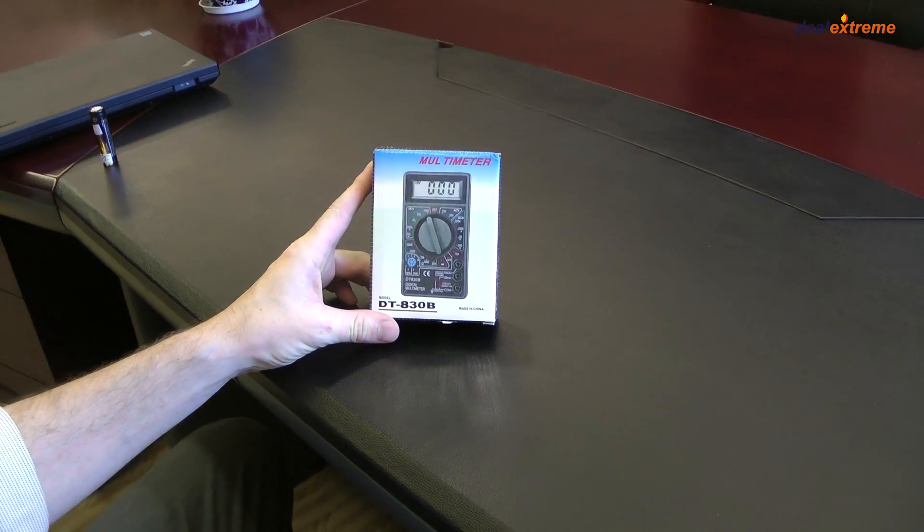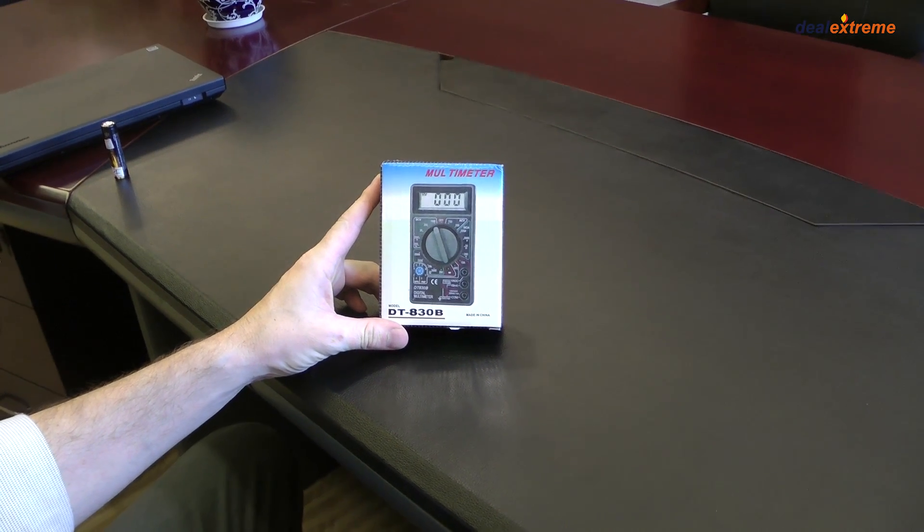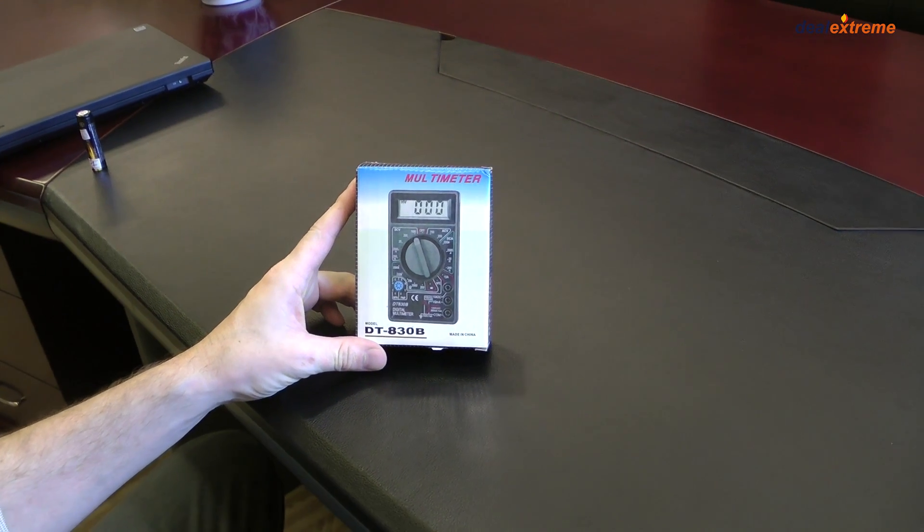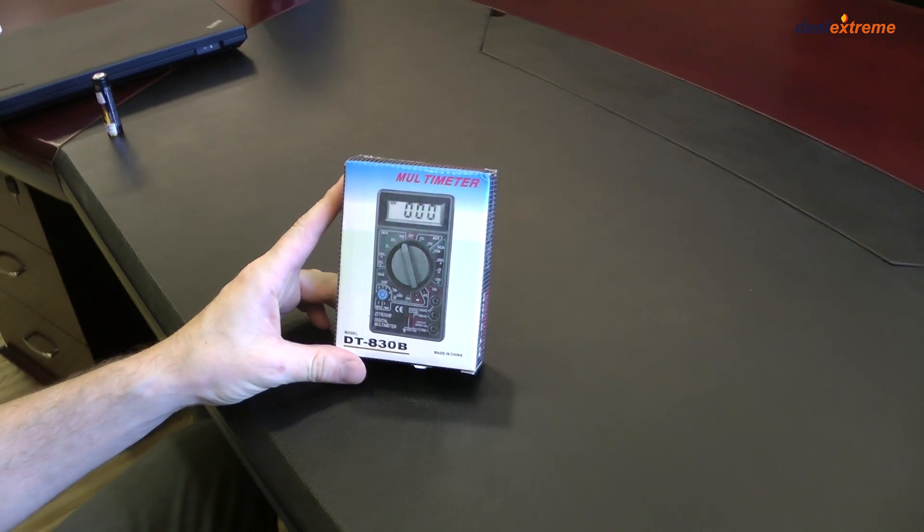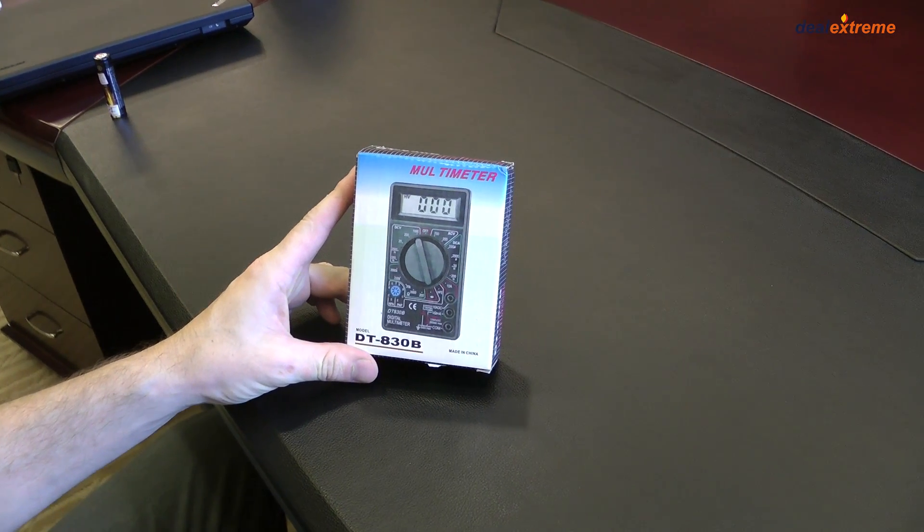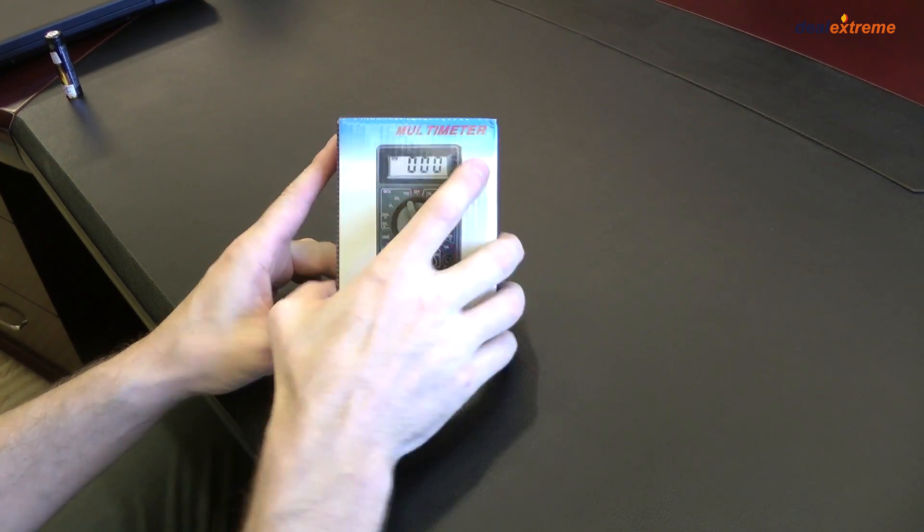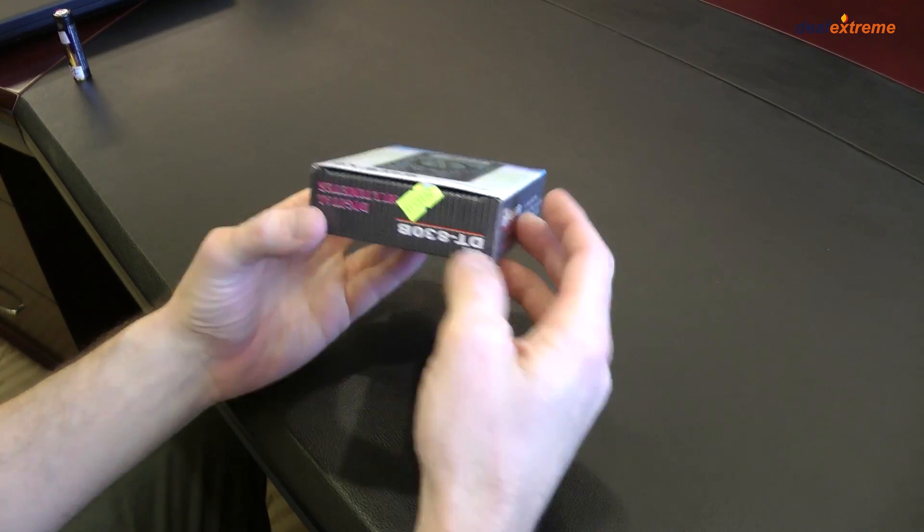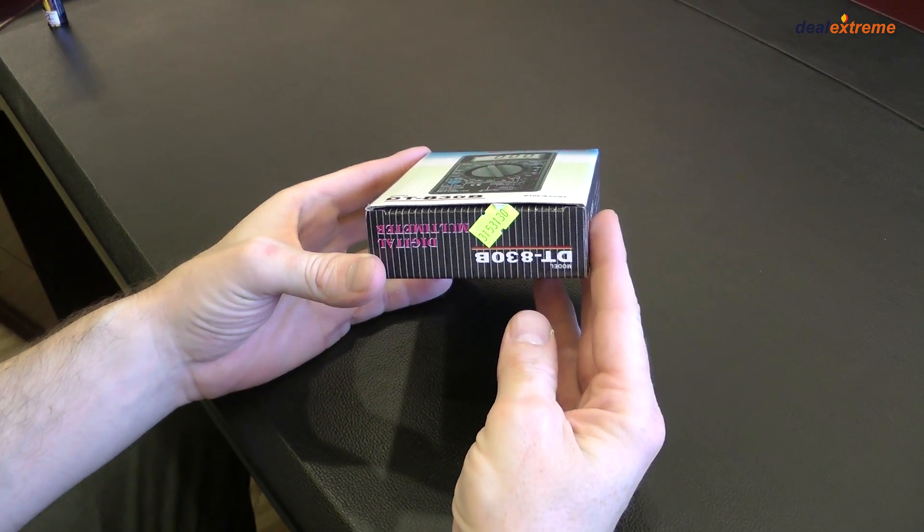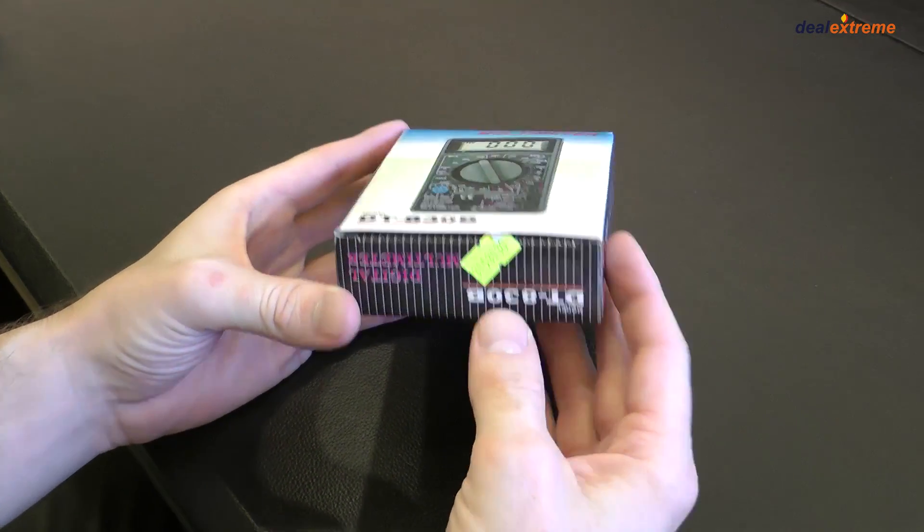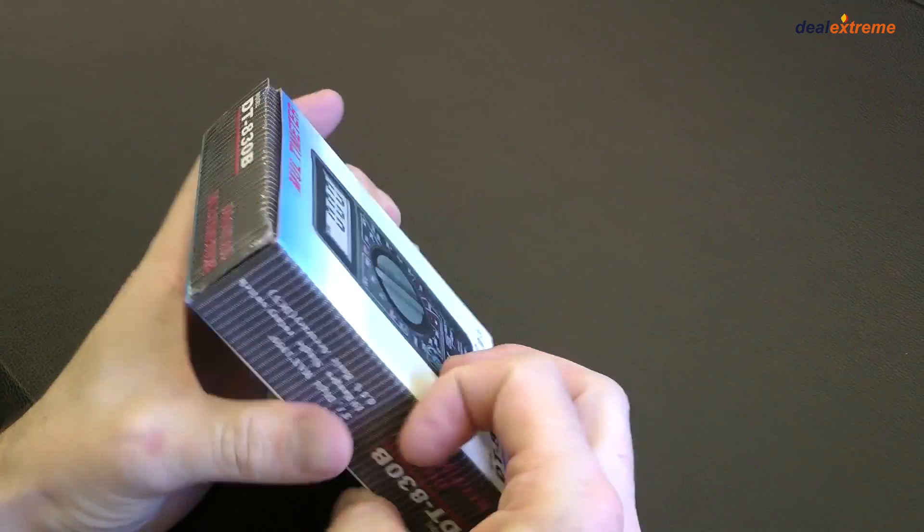Okay folks, standard digital multimeter. We have these on special discount right now on our home page. This is the model DT830B which for us is a SKU number 53130. Let's take a look at it.